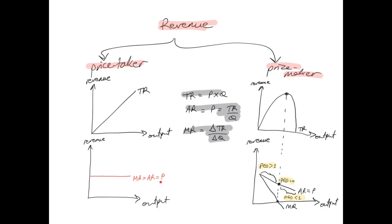For a price taker, the marginal revenue and the average revenue will be equal to the price and will form a straight horizontal line. TR equals P times Q; average revenue equals price, because AR is TR divided by Q, and TR is P times Q. So average revenue is just another word for price. Marginal revenue is delta TR divided by delta quantity of output.